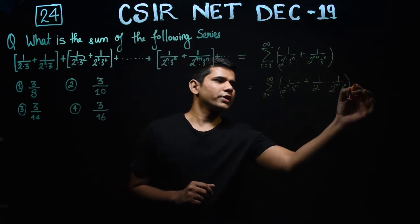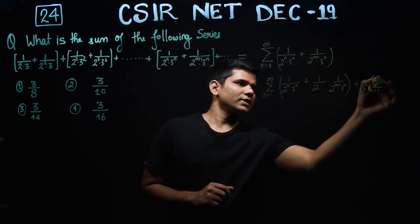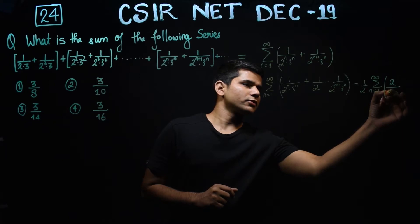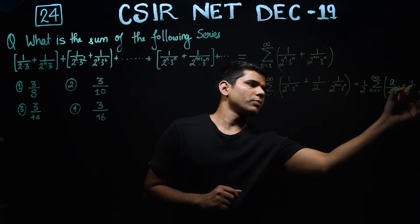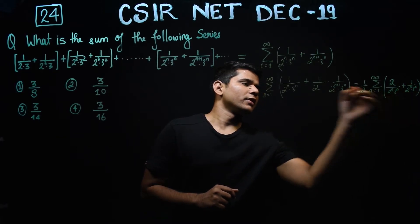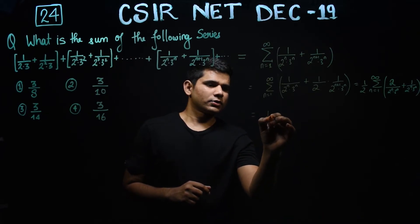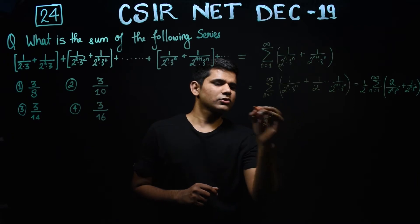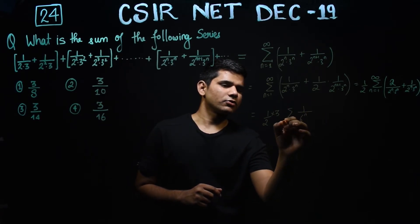If you take this 2 out, you will have a good situation. You get 2 over 2 to the power n times 3 to the power n, plus 1 over 2 to the power n times 3 to the power n. Now you see this will add up: the 2 and the 3 combine, and what you are getting then is 6 to the power n in the denominator.